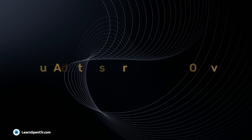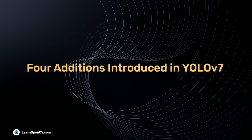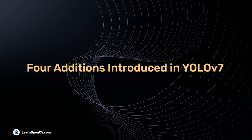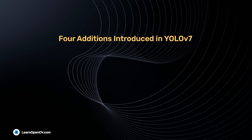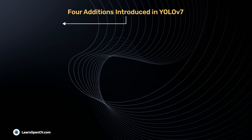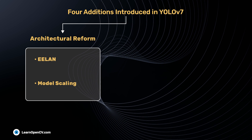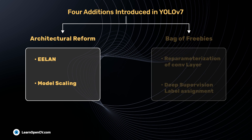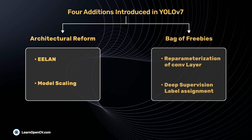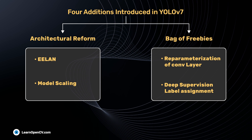There are four important additions introduced in YOLO v7. Two are part of the architectural reforms and the other two are part of the trainable bag of freebies.